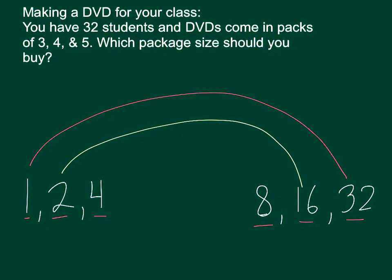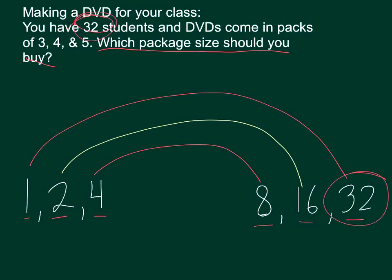Now going back to our original question which package size should I buy? Well if I buy three or five I'm either going to wind up with more DVDs than I need or fewer because they are not factors that get me to exactly 32 and that's where I want to be exactly 32. The only number on this list that will get me exactly to 32 is four.